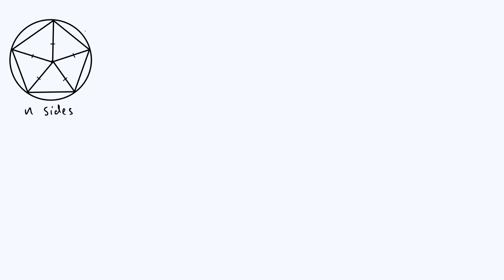We can start by calling this shape T, and we are trying to derive the moment of inertia I of that shape T — that isosceles triangle — when it's rotating about the point in the middle. By definition, the moment of inertia is the integral of r² dm, where dm is a little mass element.